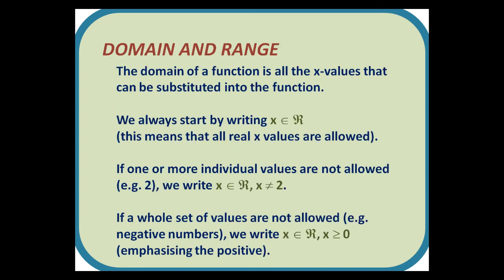The domain of a function is all the x-values that can be substituted into the function. We always start by writing x ∈ ℝ, which is set notation for x is a real number. If one or more individual values are not allowed, for example 2, we write x ∈ ℝ, x cannot equal 2. If a whole set of values are not allowed, for example negative numbers, we write x ∈ ℝ, x ≥ 0. So if there are individual values that aren't allowed, we write 'not equal to', but where a whole set of values aren't allowed, we instead say what we are allowed.